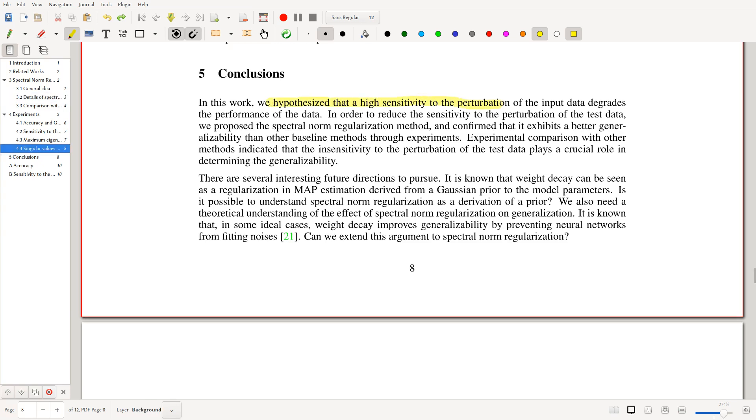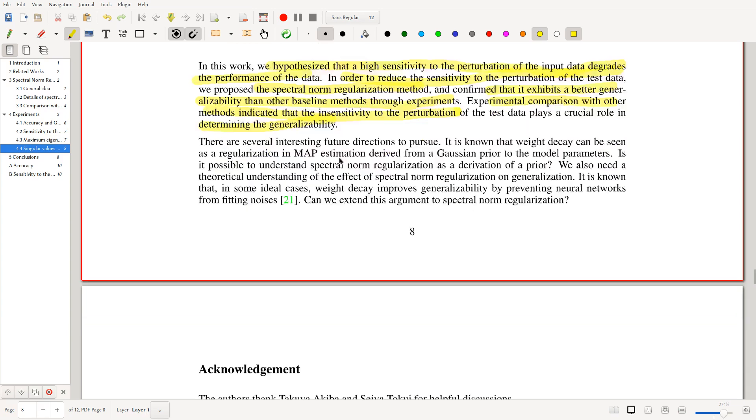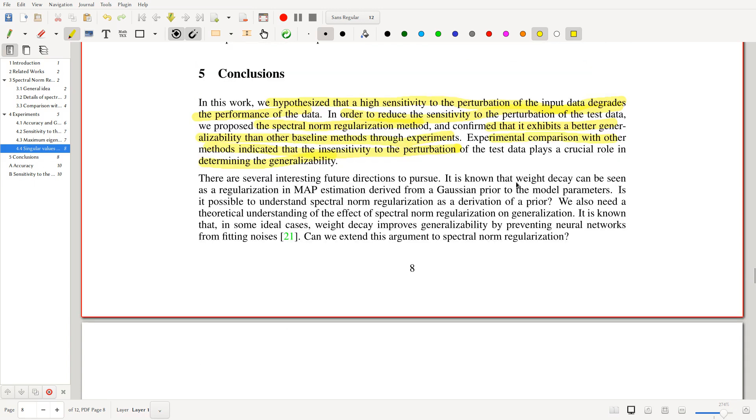In this work, we hypothesize that high sensitivity to perturbation of input data degrades their performance. In order to reduce the sensitivity, we propose spectral norm regularization and confirm that it exhibits better generalizability than other baseline methods through experiments. Experimental comparison with other methods indicated that insensitivity to perturbation of test data plays a crucial role in determining the generalizability, which is a very important takeaway. There are several future directions. It's known that weight decay can be seen as a regularization in MAP estimation derived from Gaussian prior to model parameters. Is it possible to understand spectral norm regularization as a derivation of prior and so on? We also need a theoretical understanding of the effect of spectral norm regularization on generalization.